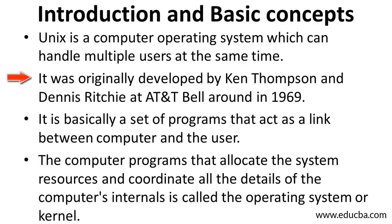It was originally developed by Ken Thompson and Dennis Ritchie at AT&T Bell Laboratories around 1969. It has a long history. How Unix development started: Dennis Ritchie and Ken Thompson first worked on a language known as B, then C came. In the process, Unix was developed. This was basically to serve the feature for multiple users and multitasking.